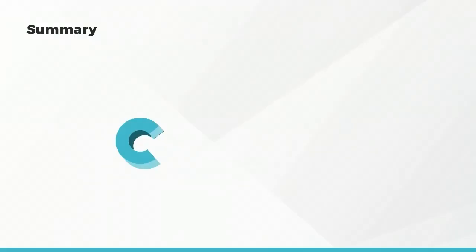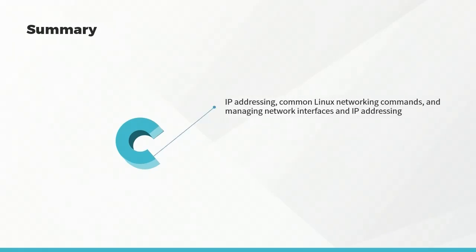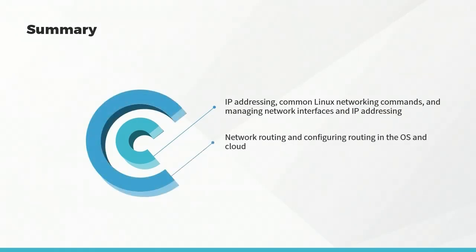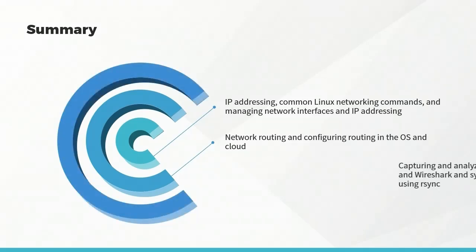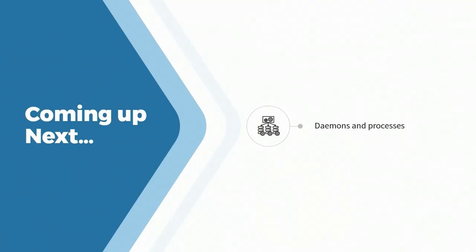In this course, we examined how to implement and manage IP addressing and routing in Linux, and captured and analyzed network traffic. We explored IPv4 and IPv6 addressing, common Linux networking commands, managing network interfaces and IP addressing, and network routing — both in the OS and in the cloud. We also captured and analyzed traffic using tcpdump and Wireshark, and synchronized files between Linux hosts using rsync. The next course will cover managing Linux processes, daemons, scheduled tasks, and logging.